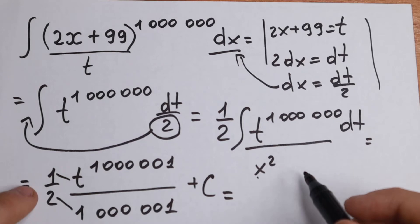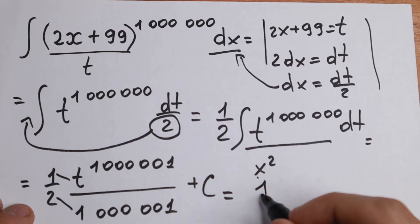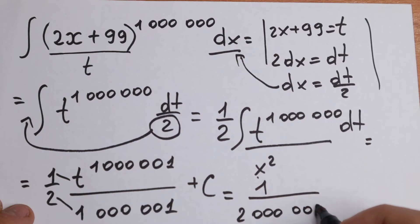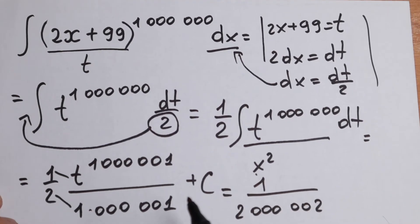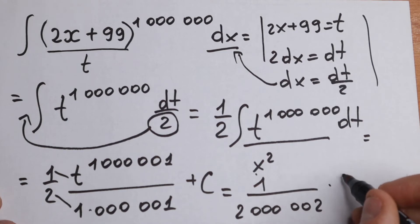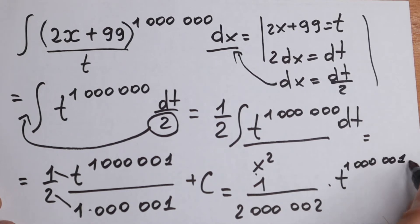And we can simplify this. We can write this constant 1 over 2,000,002. This is our constant. We multiply this and we need to multiply this by t to the power 1,000,001 plus c.